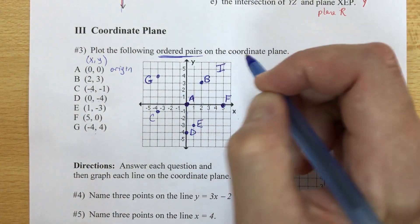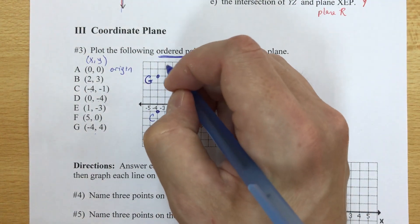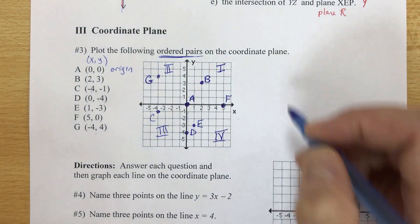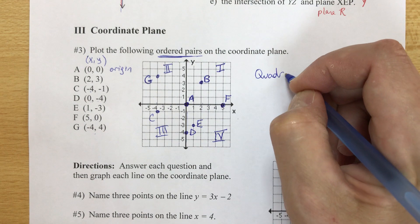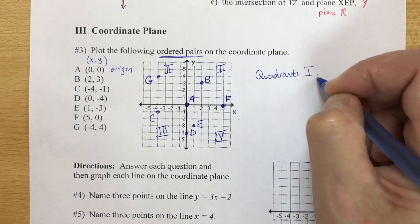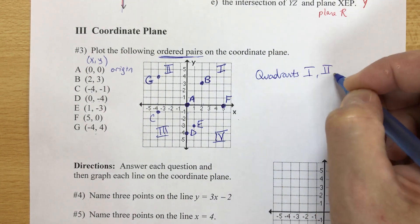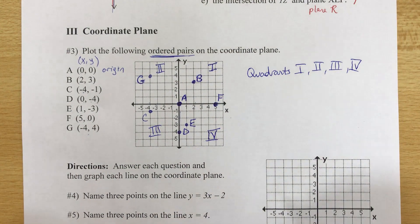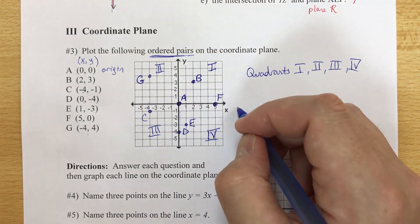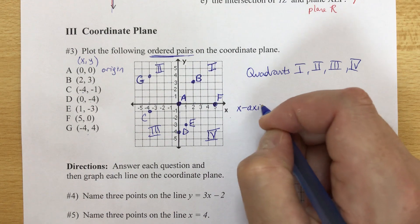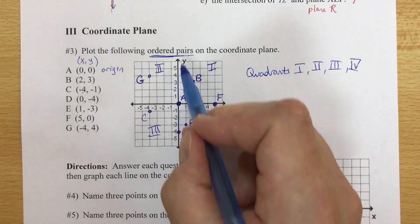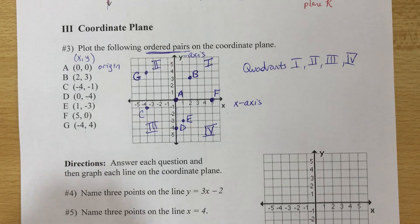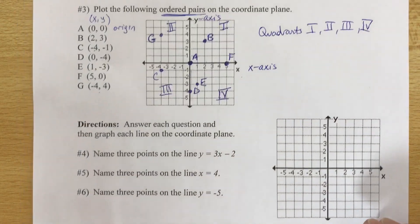The coordinate plane is divided into four quadrants — quarters — labeled one, two, three, and four. The horizontal line is called the x-axis and the vertical line is called the y-axis.